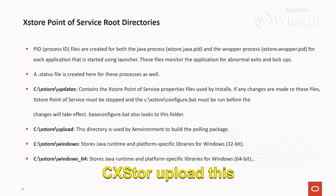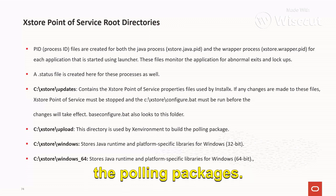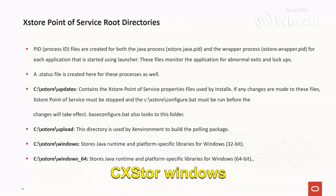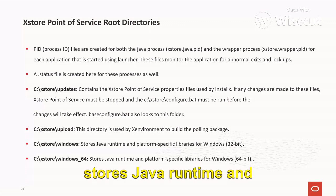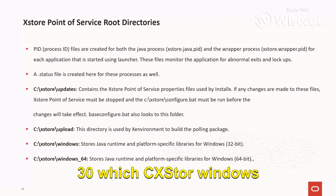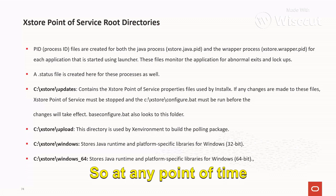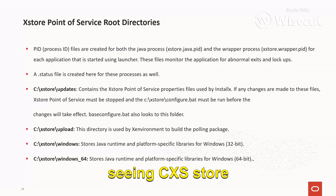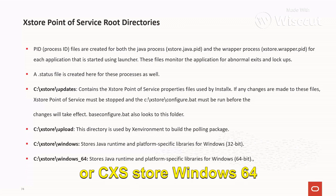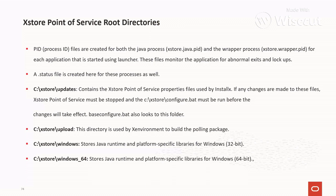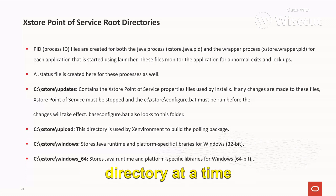C:\AccessStore\upload — this directory is used by the X environment to build the polling packages. C:\AccessStore\windows stores Java runtime and platform-specific libraries for Windows 32-bit. C:\AccessStore\windows_64 stores Java runtime and platform-specific libraries for Windows 64-bit. At any point in time, you will see either the windows, windows_64, linux, or linux_64 directory — not all four directories will be available in one installation.